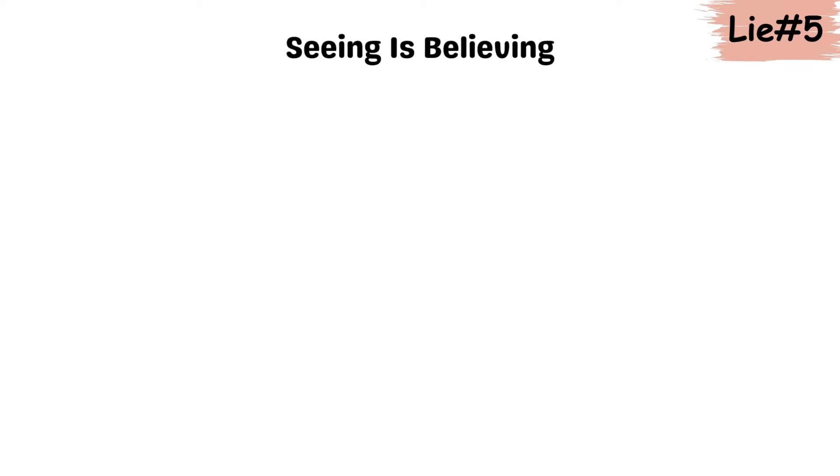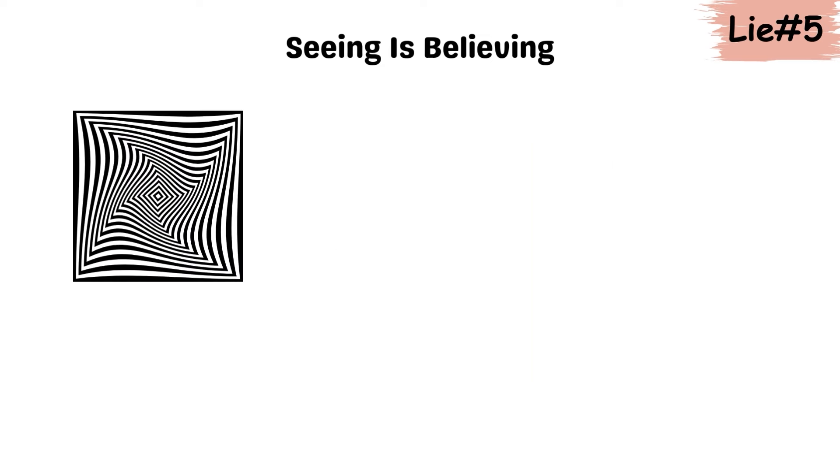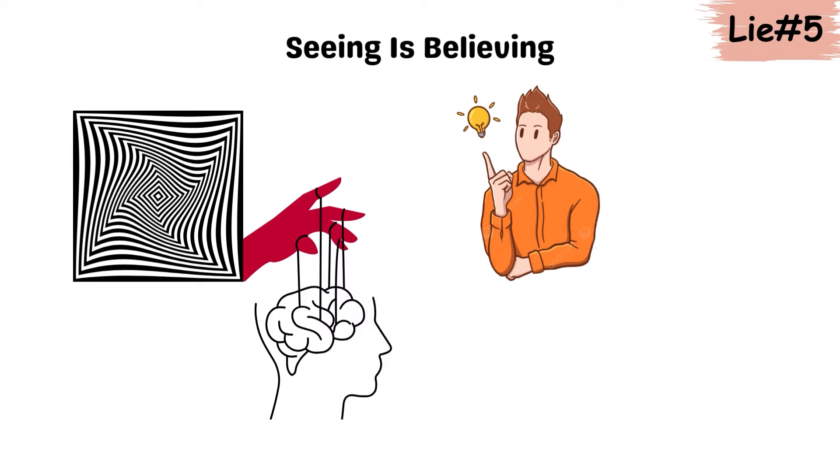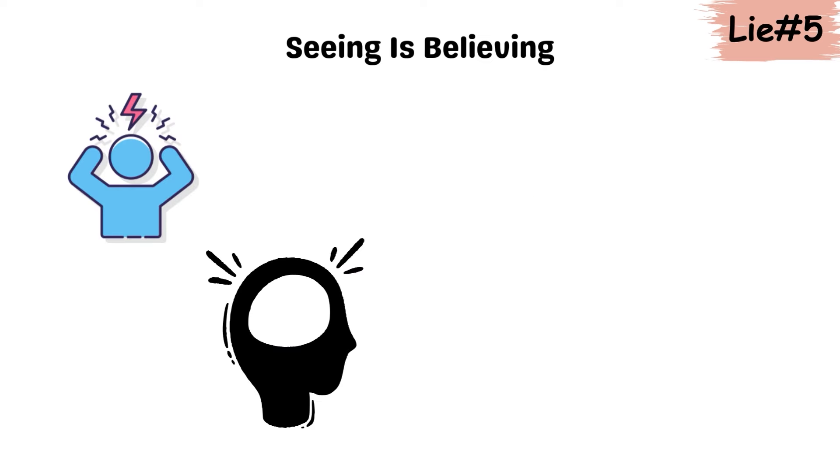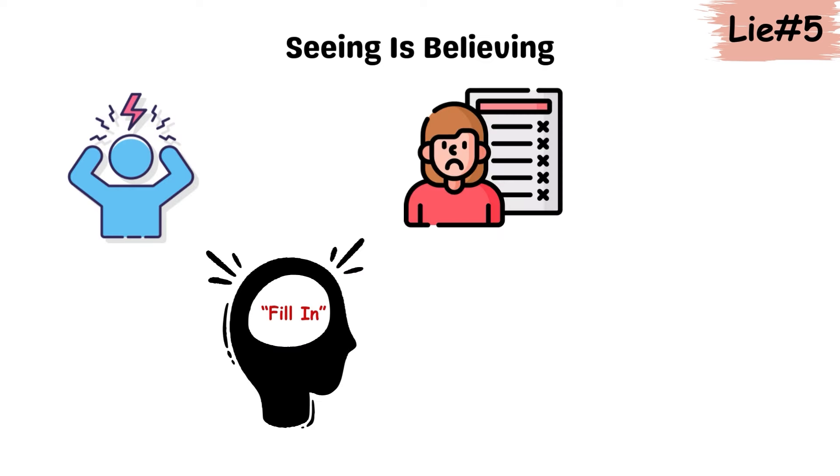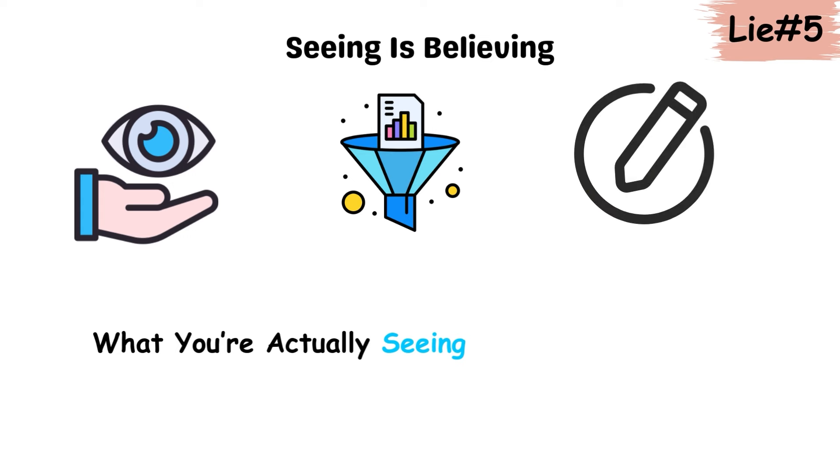Lie 5. Seeing is believing. Your brain often convinces you that what you see is an accurate representation of reality, but perception is highly subjective. For example, optical illusions trick your brain into seeing things that aren't there, while emotions can alter what you see entirely. In high-stress situations, your brain might fill in details to make sense of incomplete information. So while you may trust your eyes, what you're actually seeing is a filtered, edited version of reality that your brain has tailored just for you.